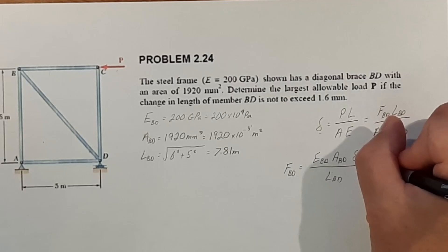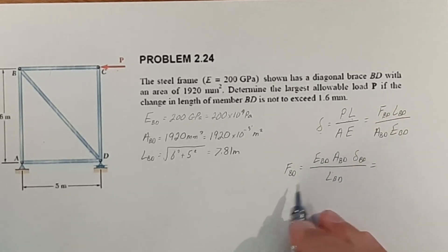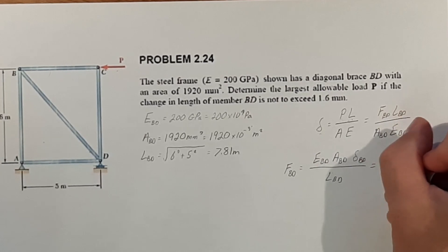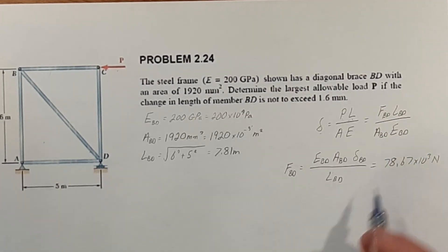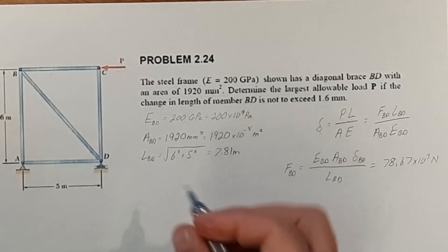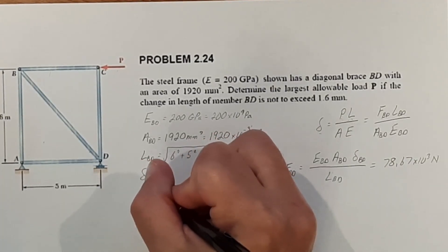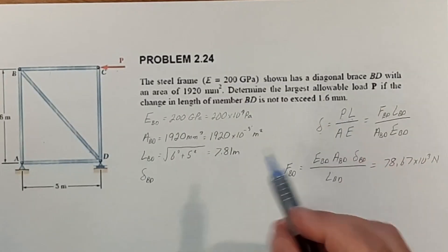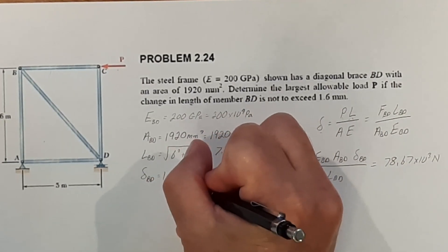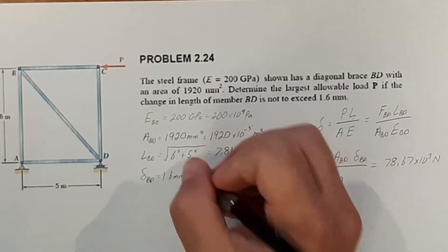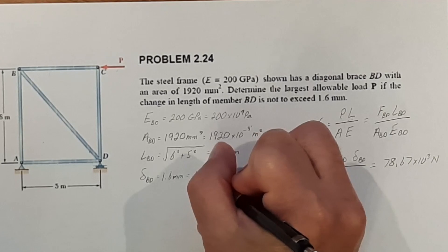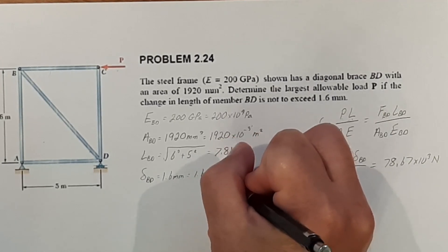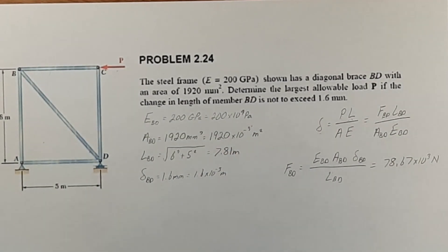And inputting all these values, we get F of BD is going to be equal to 78.67 times 10 to the third newtons. And I know I didn't have the change in length written here, so I'll go ahead and write it. Change in length of BD was given in the problem as 1.6 millimeters or 1.6 times 10 to the negative third meters, keeping all our units the same.